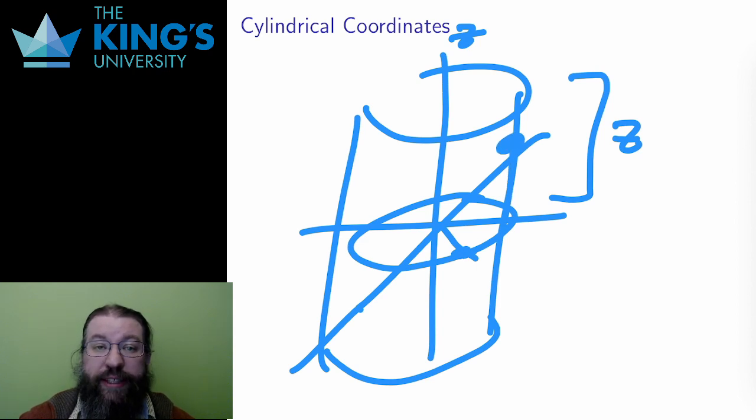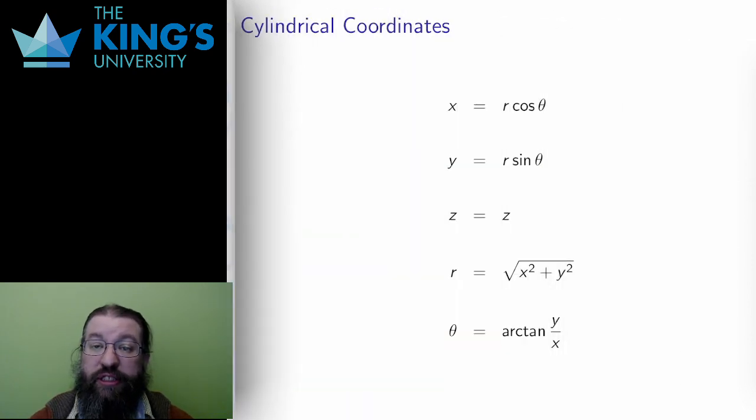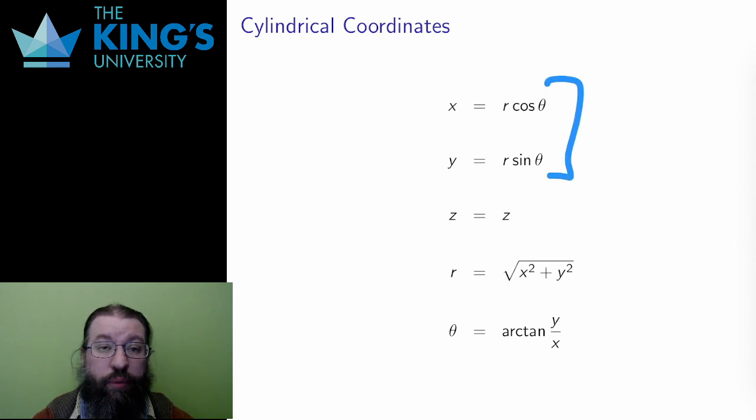The radius coordinate r is the distance out from the z-axis. The angle coordinate theta is the angle from the positive x-axis counterclockwise in the xy-plane, and the height coordinate z is the height above the xy-plane, which is the usual z coordinate. Since cylindrical coordinates are essentially polar coordinates with the usual R3 z, the transformations are the same. X is r cos theta, and y is r sine theta. Just like with polar coordinates, z is just z.